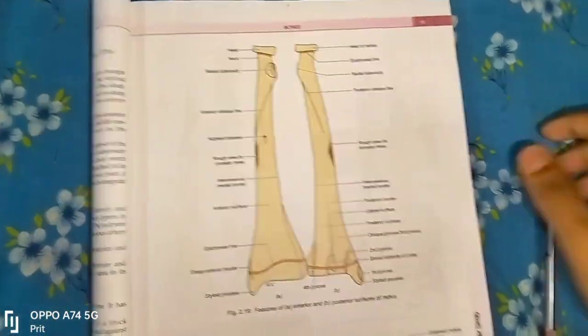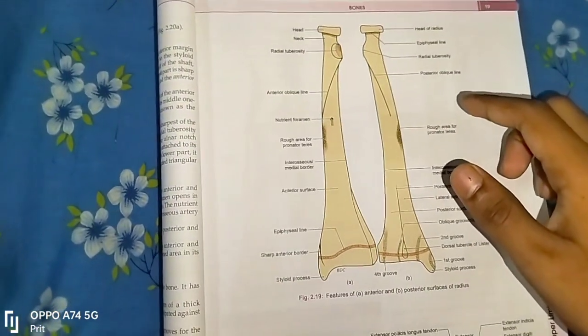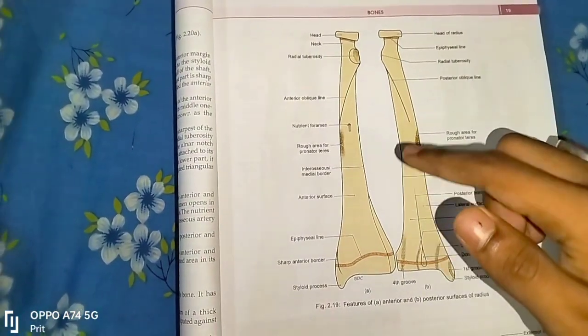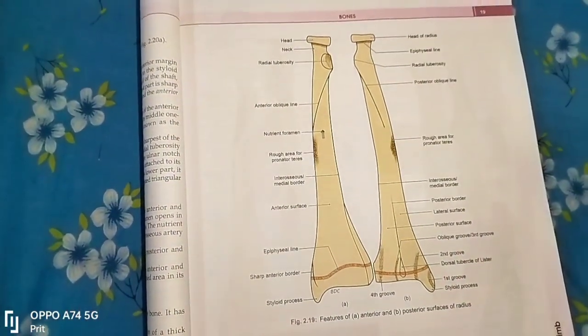Hello friends, my name is Vidyash and today we discuss the radius bone. The radius bone is the lateral bone of the forearm and it is homologous with the tibia of the lower limb. For side determination, keep the bone vertically.